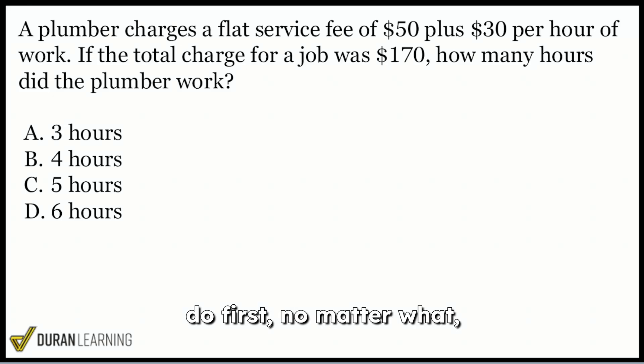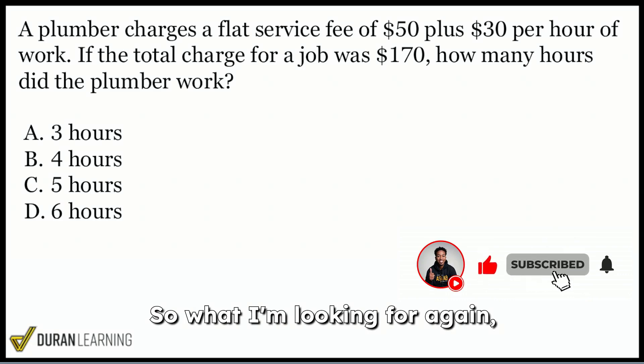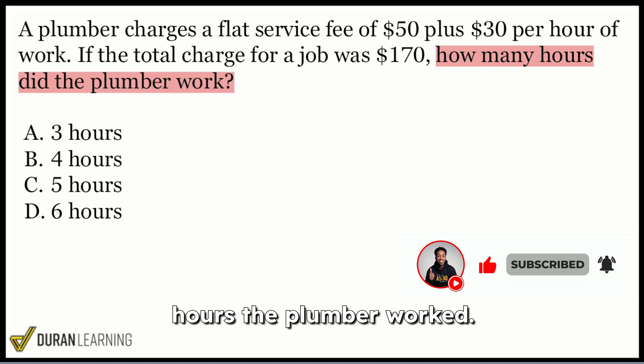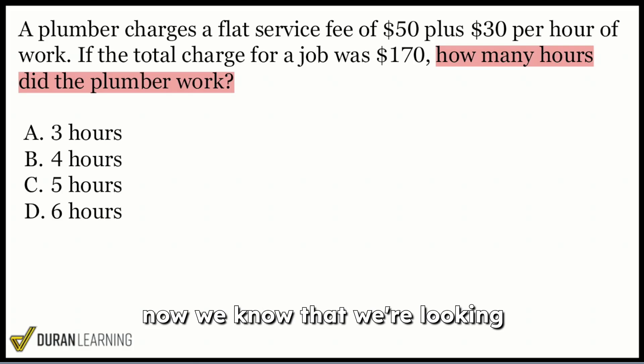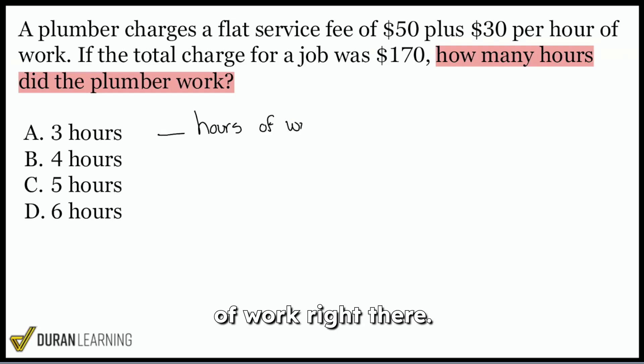So here's what we're going to do first. No matter what, this is an arithmetic reasoning. We want to read the question first. So when we read the question, it says if the total charge was this much money, then how many hours did the plumber work? Okay, cool. So what I'm looking for, always read the question first. We're looking for how many hours the plumber worked. So off of that first step, now we know that we're looking for a time period. And the answer choices, they tell us that too, right? We have those answer choices.